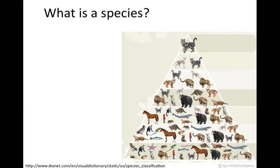Humans have been classifying organisms for a long time. Linnaeus, the famous founder of modern taxonomy, began characterizing organisms based on appearance.